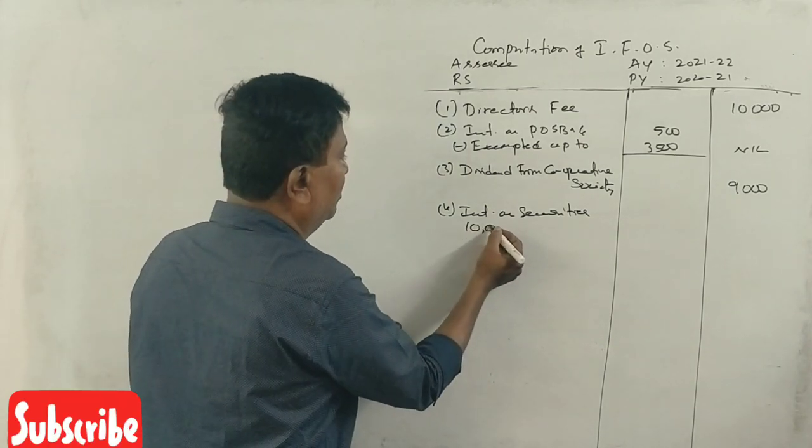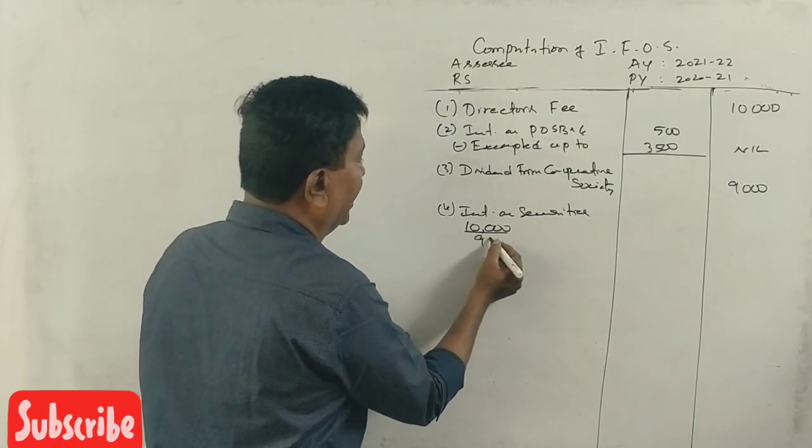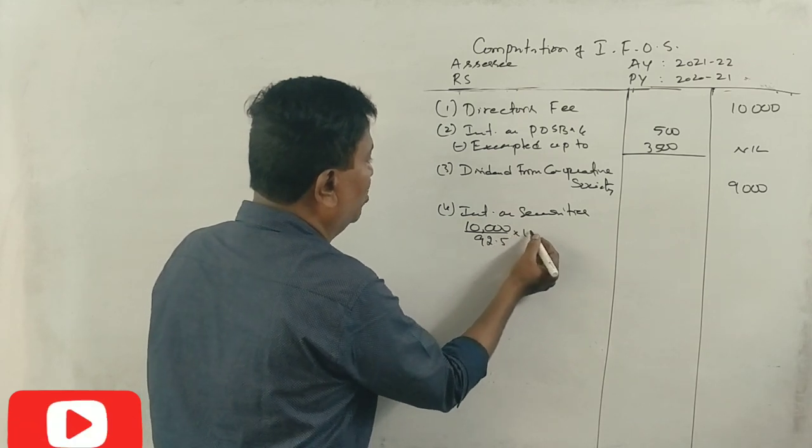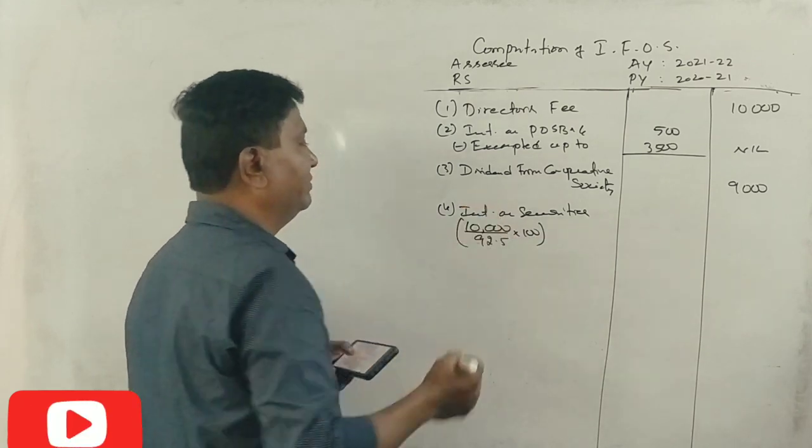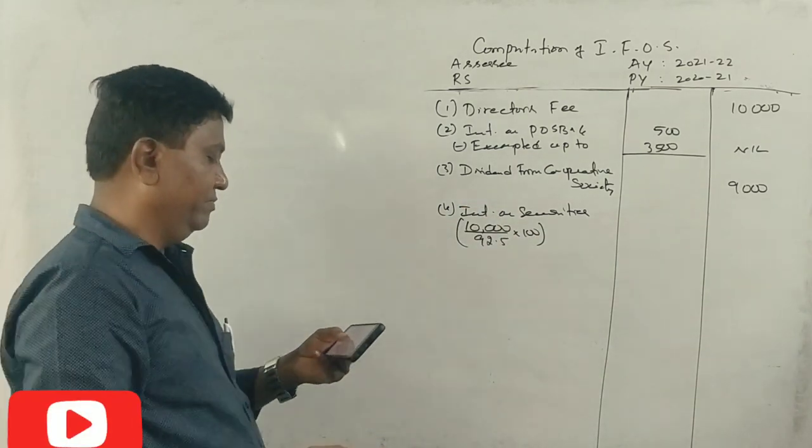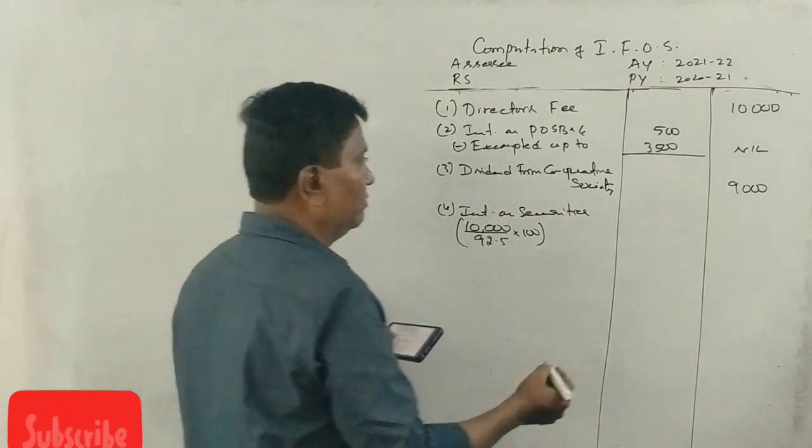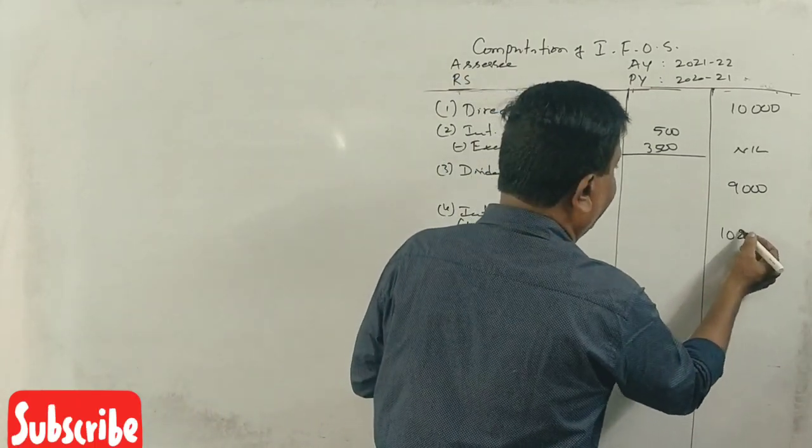So 10,000 rupees, divided by 92.5 into 100, yes for the head, 10,810 rupees.